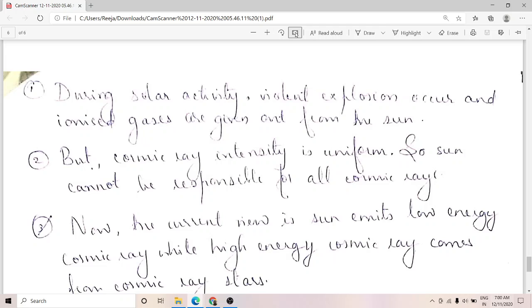The current view is that the sun emits the low energy cosmic rays while the high energy cosmic rays come from cosmic ray stars.